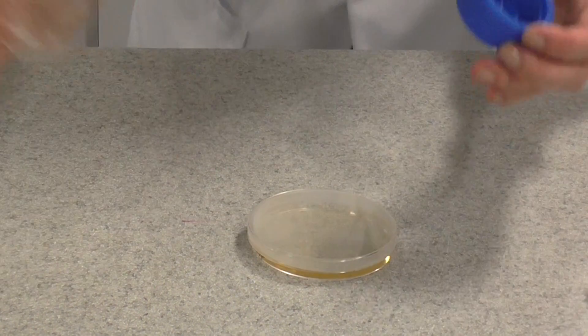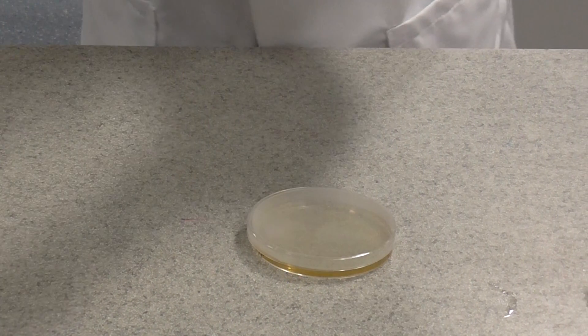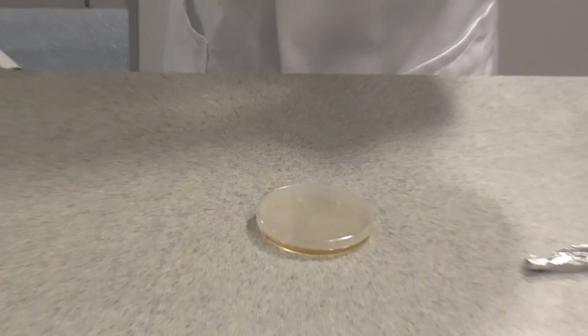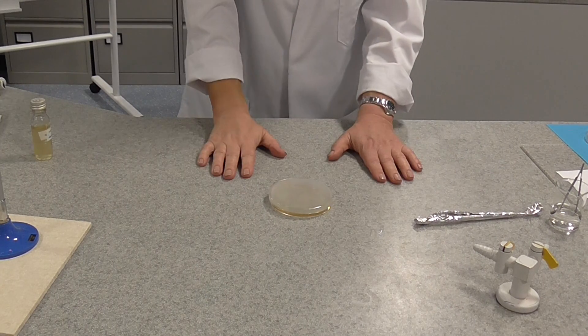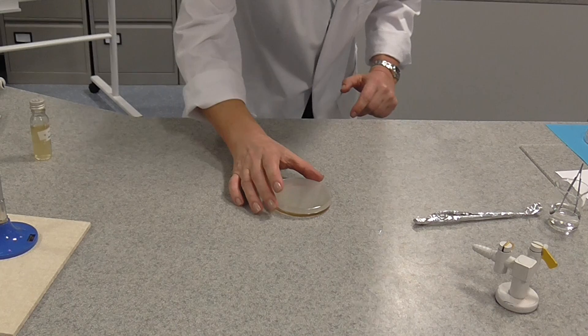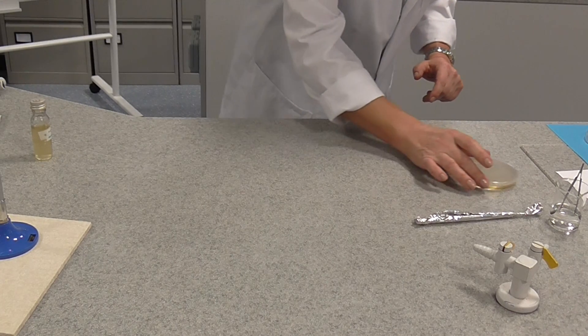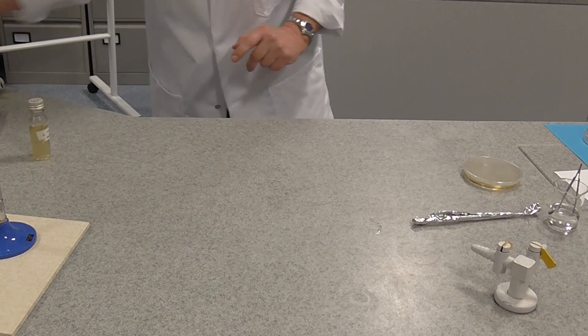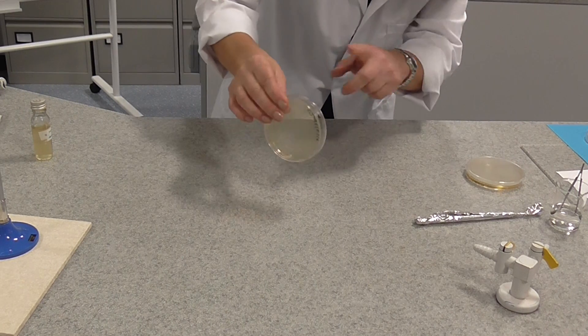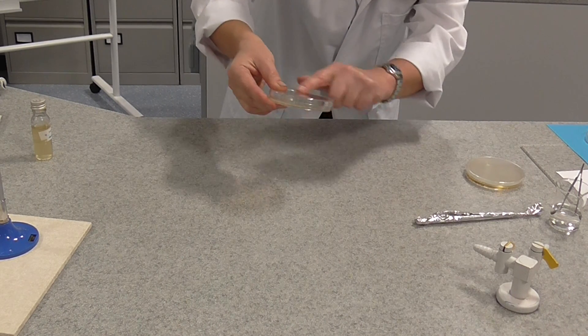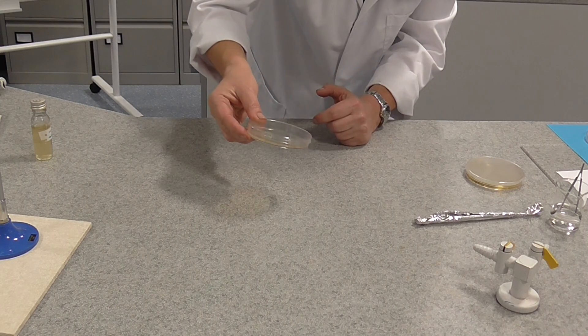We can now replace the lid and this is ready to now be sterilised. The next thing you have to do, you've got to leave your agar exactly where it is now to set. I'm going to just move that very gently to one side because I've actually prepared one earlier. So in the bottom of this petri dish, we actually have agar, which I've already inoculated with bacteria.